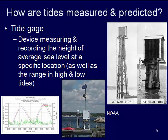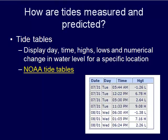So how do we predict? We get these tide tables because of predictions that we'll discuss a little bit later. These tide tables show the day, the time of the high and the low, and the numerical change in water level for a specific location. These tide tables are predictions — we use data collected from tide gauges, historical data for the area, and our knowledge of moon cycles and tide cycles to create them.